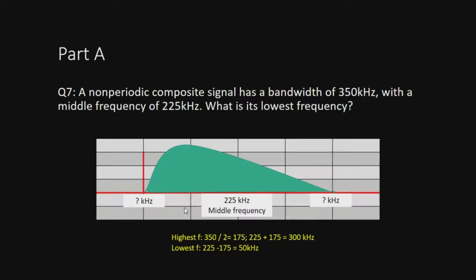You can visualize this using a figure. You don't know the exact lowest or highest frequency, but you know the middle frequency is 225 kilohertz and the bandwidth — from lowest to highest — is 350. So you divide the bandwidth by 2: 350 divided by 2 equals 175.